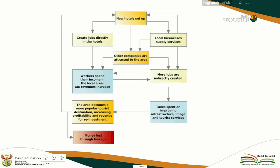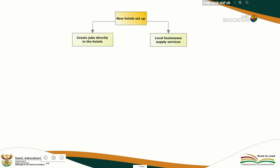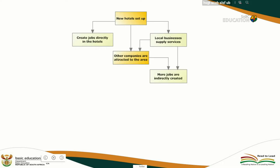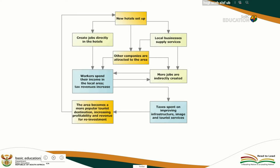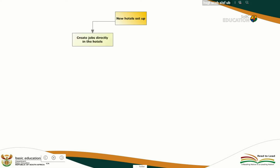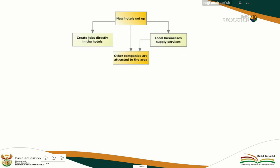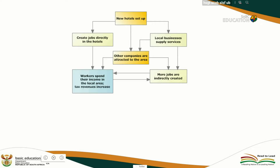Looking at the multiplier effect graph: new hotels are set up, creating jobs directly. Local businesses supply services and other companies are attracted to the area and invest. This means more jobs are indirectly created. Workers spend money locally, increasing revenues. Tax can be used to improve infrastructure, the image of the business, and the tourism industry. Some money may leak due to imports.